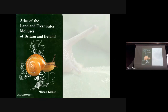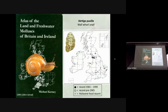We started recording shells, or mollusks in Britain seriously in the 1990s when an atlas came out, which is still a reference for what is around. But of course things very soon get out of date. Even an old atlas like this, which is now nearly 25 years out of date, is very useful to show how things have changed. If we look at one particular tiny little snail, you can see the dots are where it's been recorded from 1965 to 1999.